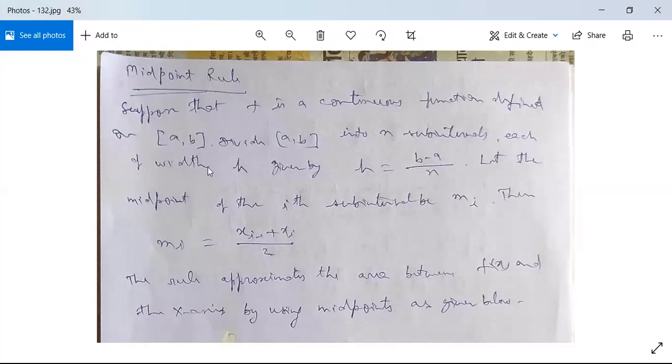Next we divide [a, b] into n subintervals, each of width h, given by h equals (b minus a)/n. This n is the number of subintervals. Let the midpoint of the ith subinterval [xᵢ₋₁, xᵢ] be mᵢ. Then mᵢ will be (xᵢ₋₁ plus xᵢ)/2, because we have taken the summation of xᵢ₋₁ and xᵢ and divided by 2. That is why this is called the midpoint rule.